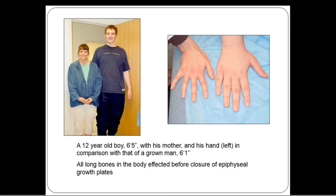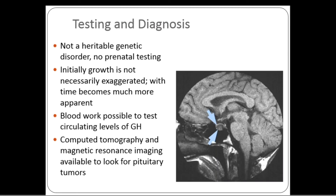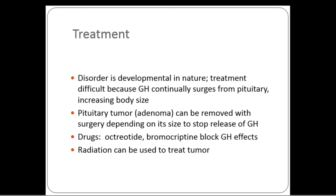Gigantism is not a heritable disorder, so prenatal testing is not possible. After birth, growth is not necessarily exaggerated initially but becomes more apparent as the child grows much faster than peers. Blood work can test circulating levels of growth hormone, though this may not tell the whole story. CT scans and MRI are available to look for pituitary tumors, as shown in this picture.